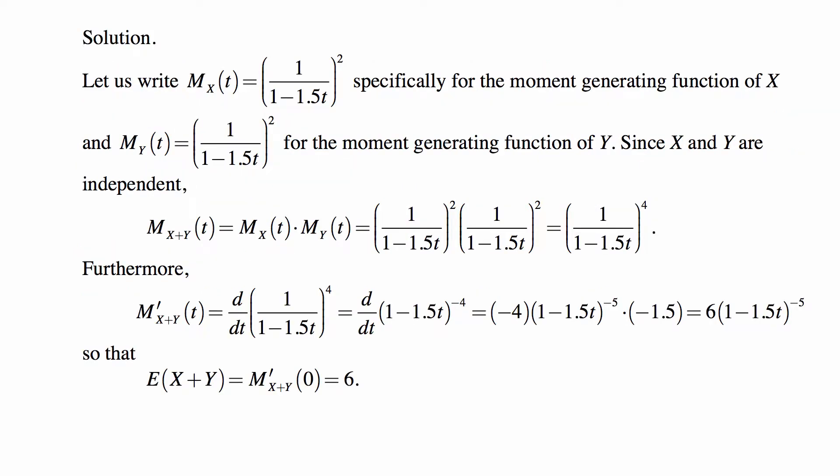Okay, let's write M_X(t) for the moment generating function of X, and M_Y(t) for the same for Y, and of course they have the same formula. Since X and Y are independent, the MGF of their sum is a product of the individual MGFs, so it's (1/(1-1.5t))^4.